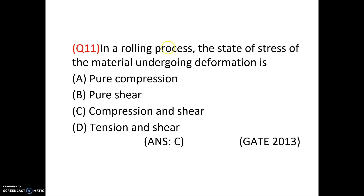In a rolling process, the state of stress of the material undergoing deformation is compression and shear. Although compressive load is applied, the material undergoes both compression and shear stress. So option C is correct.